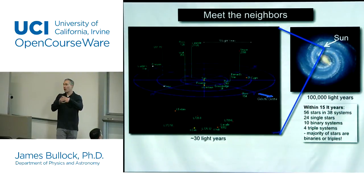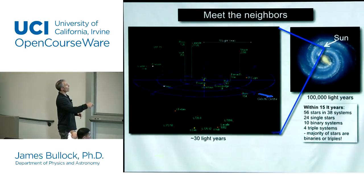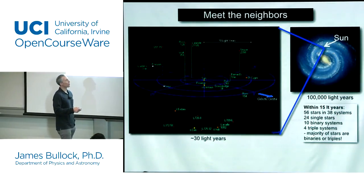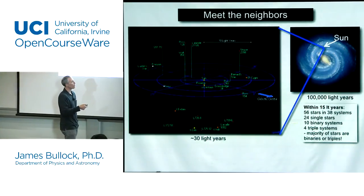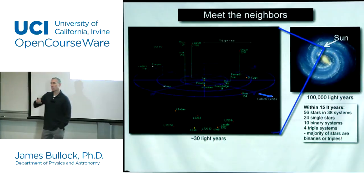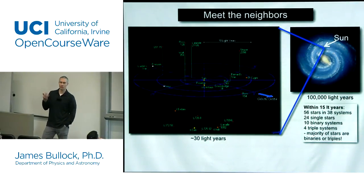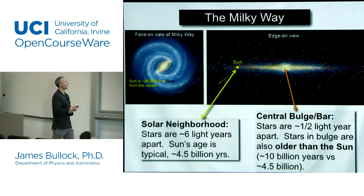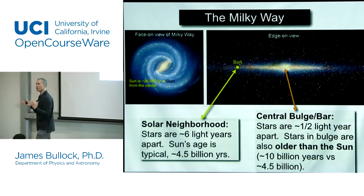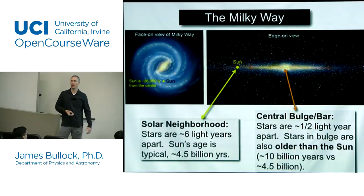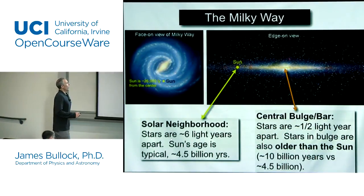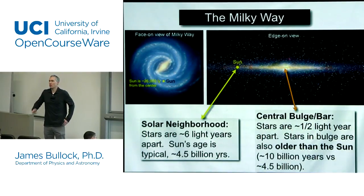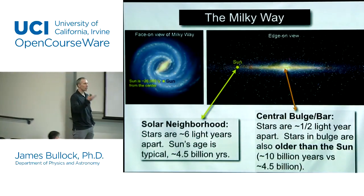Out to 30 light years, this is a map of all the kind of brightish stars within 30 light years of the sun. Within 15 light years of the sun there are 56 stars, but there are only 38 systems because a lot of these are multiples — 24 single stars, 10 binary systems, four triplet systems. So the majority of the stars right around us are in these multiples, and that's just what's typical. Stars are about six light years apart on average. Most of the stars out here where the sun is are about four and a half billion years old, and that's the age of the sun — so we are typical in terms of age.